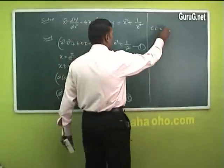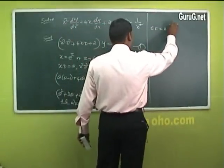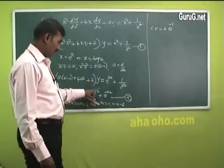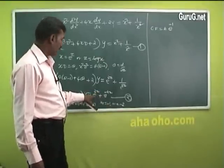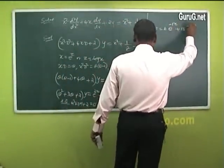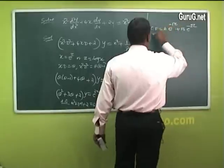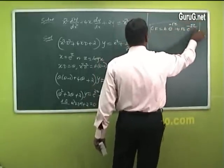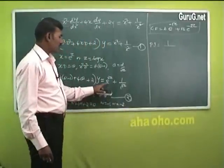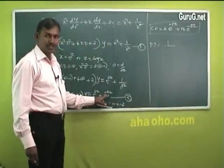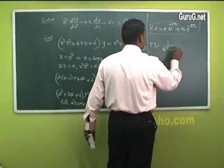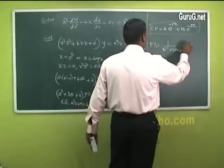The roots are distinct, so the complementary function is CF = ae⁻ᶻ + be⁻²ᶻ. For the particular integral, there are two functions e²ᶻ and e⁻²ᶻ. Taking PI₁ = (1/(θ² + 3θ + 2)) e²ᶻ — this is the first type, so θ is replaced by 2.